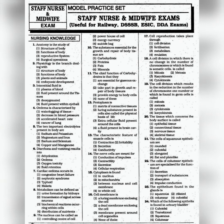Question 19: The cell division which results in reduction in number of chromosomes is meiosis. Question 20: Tissue which covers the body surface is called as — the answer is option 1: Epithelial tissue.